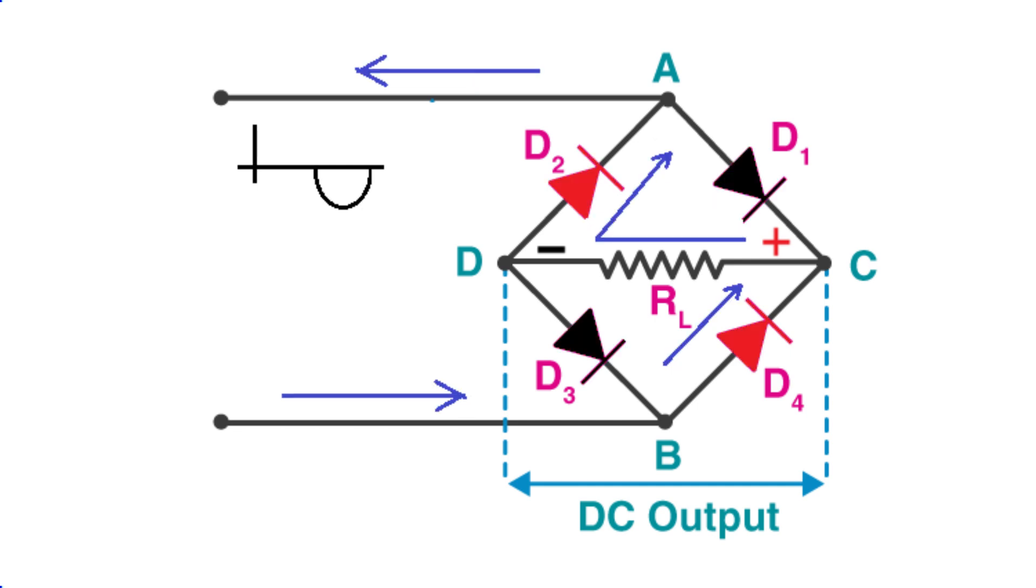What if a negative pulse emerges at terminal A? Polarities exchange roles. Diodes D2 and D4 switch to forward biased, and diodes D1 and D3 flip their bias. The current flows in the converse direction, yet the polarity of the voltage developed at point C, the load resistor, stays constant.